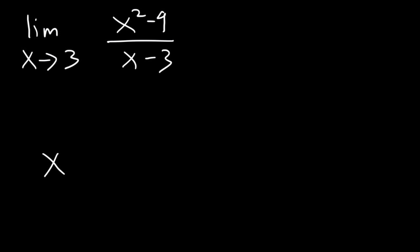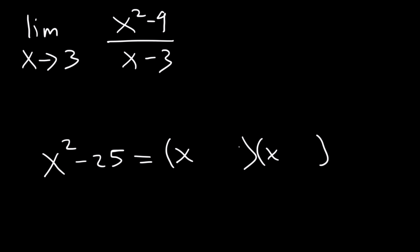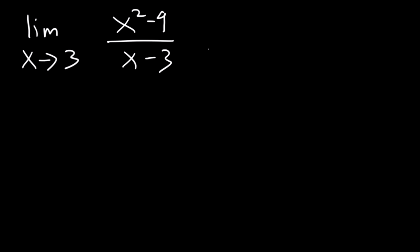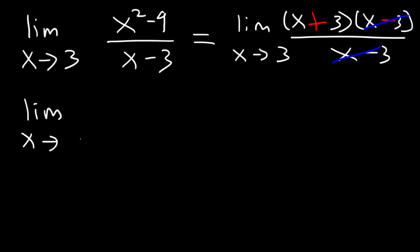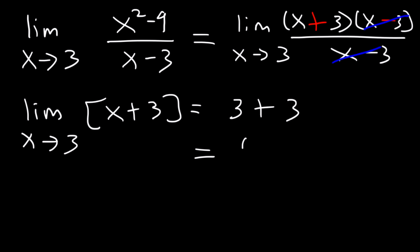For example, x squared minus 25 factors as x plus 5 times x minus 5. For our problem, the square root of x squared is x and the square root of 9 is 3, so it factors as x plus 3 times x minus 3. We cancel x minus 3, leaving the limit as x approaches 3 of x plus 3. Direct substitution gives 3 plus 3, which equals 6.